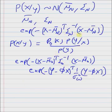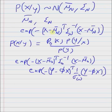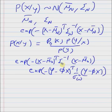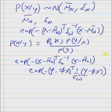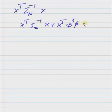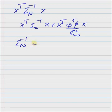Now, comparing the quadratic terms: from the posterior we get xᵀ Σ_n⁻¹ x. From the product of prior and likelihood, the quadratic term is xᵀ Σ₀⁻¹ x plus xᵀ (Φᵀ Φ / σ²_w) x. By comparing these two coefficients, we get the expression for the inverse posterior covariance matrix: Σ_n⁻¹ equals Σ₀⁻¹ plus Φᵀ Φ / σ²_w.